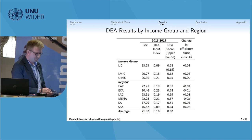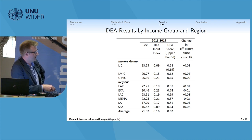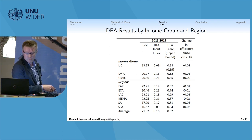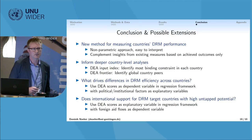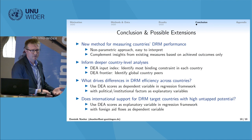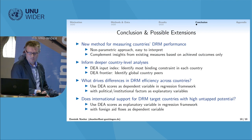The global average efficiency score is 62%, suggesting that low and middle income countries in the sample are on average achieving 62% of the revenue-to-GDP ratio they should in principle be able to achieve — which is in the range of what other approaches find. To conclude, we are not suggesting this should replace existing indicators, but we think it is a useful method to add to the toolbox, mainly because of its easy interpretability.